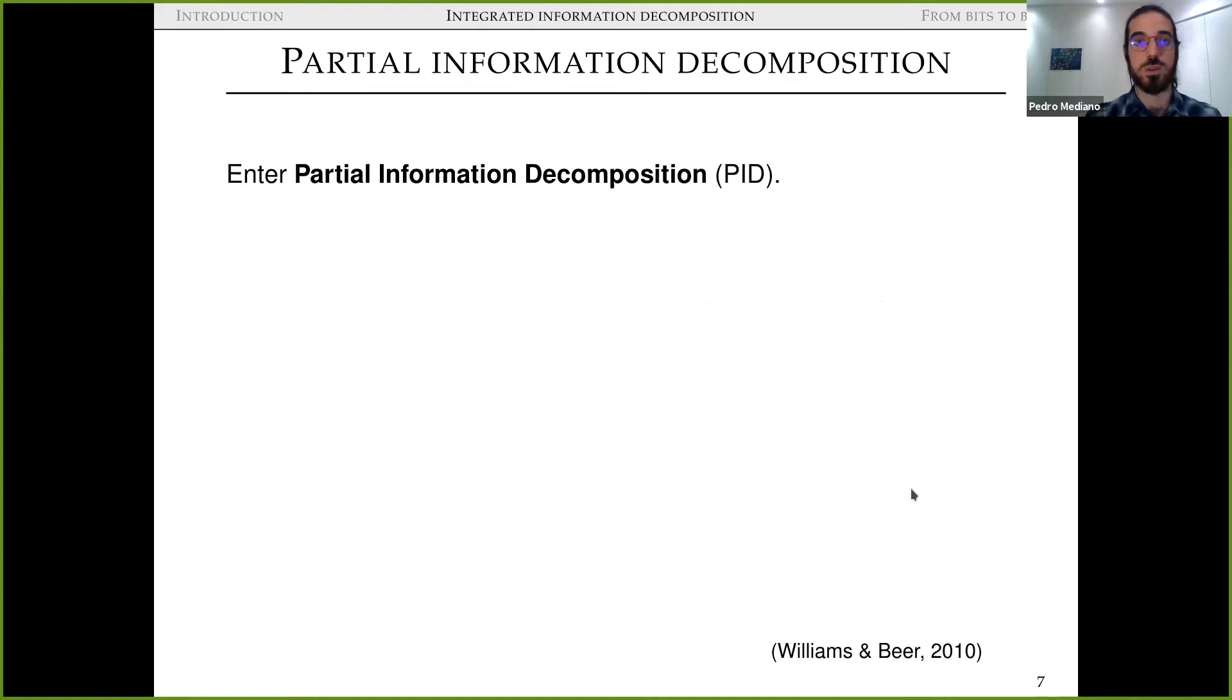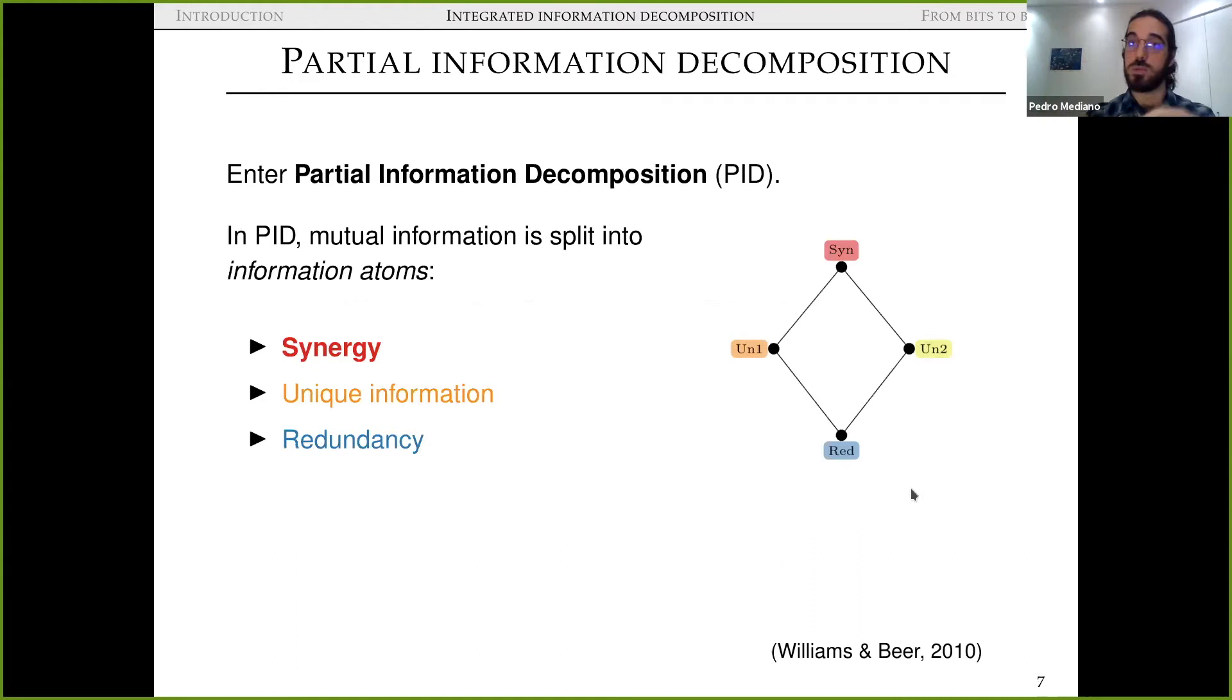So in PID, we want to decompose the mutual information that two source variables have about one target variable. So this mutual information is split into four information atoms, as they call them: synergy, unique information, and redundancy. So synergy is information that two variables have about a target, jointly but not separately. Unique information is the information that one variable has but not the other, therefore there's two of them. And the redundancy, which is the information that both of them have, independently of each other. And as you see on the right, this can be represented in a lattice, which is a type of partially ordered set, where sort of low order information is at the bottom, like the redundancy, and high order information is at the top, like synergy.